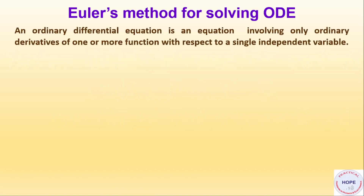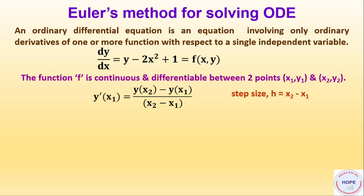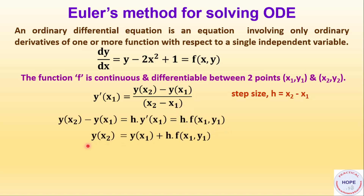An ordinary differential equation is an equation involving only ordinary derivatives of one or more functions with respect to a single independent variable — there are no partial derivatives. The function f is continuous and differentiable between two points (x1, y1) and (x2, y2). The step size h is equal to x2 minus x1, so the derivative expression can be rearranged accordingly.